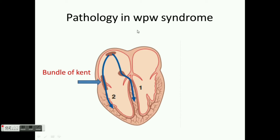Pathology in Wolf-Parkinson-White syndrome. Here there is an abnormal pathway from the atria to the ventricle, called the bundle of Kent. This causes early depolarization of the ventricles.